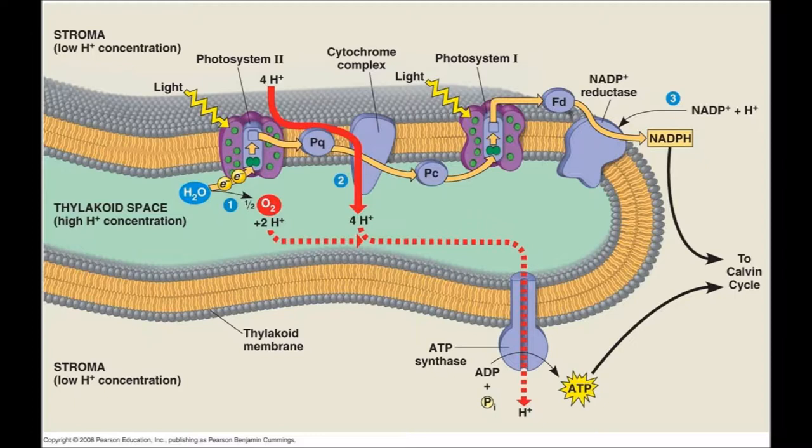The process of the light reaction begins when water enters the thylakoid membrane and it splits into oxygen, hydrogen, and electrons. Oxygen passes through the thylakoid membrane and goes out through the stomata. Electrons travel through photosystem II and are charged with energy. As they move along the electron transport chain, they actively pull hydrogen into the lumen.